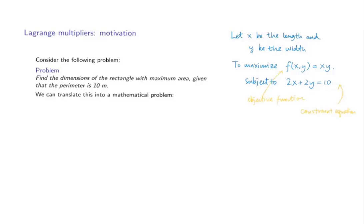So the function f(x,y) is the objective function and the equality here is the constraint equation, and it describes the restriction on the variables. The next step we will do is to rewrite y as 5 minus x and substitute it to the function f, so that it becomes h(x) equals x times (5 minus x) and proceed with the derivative test.